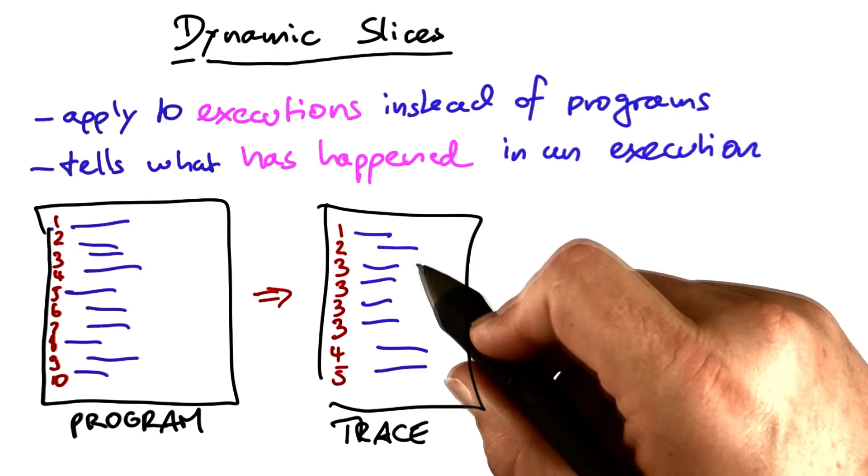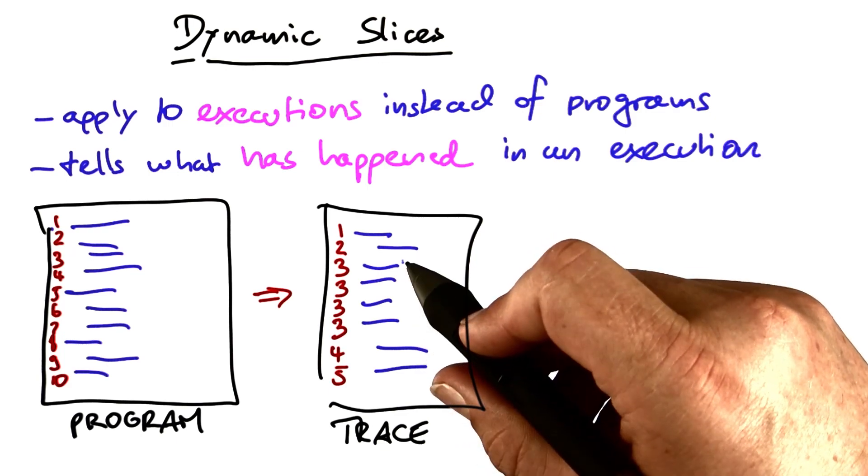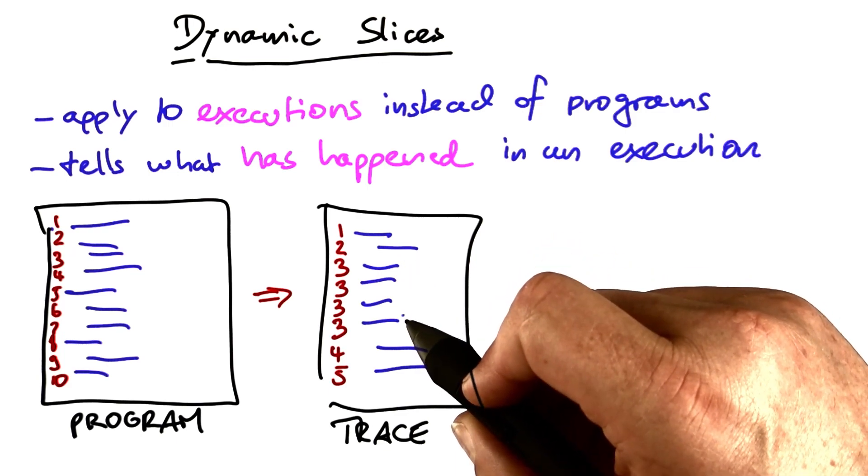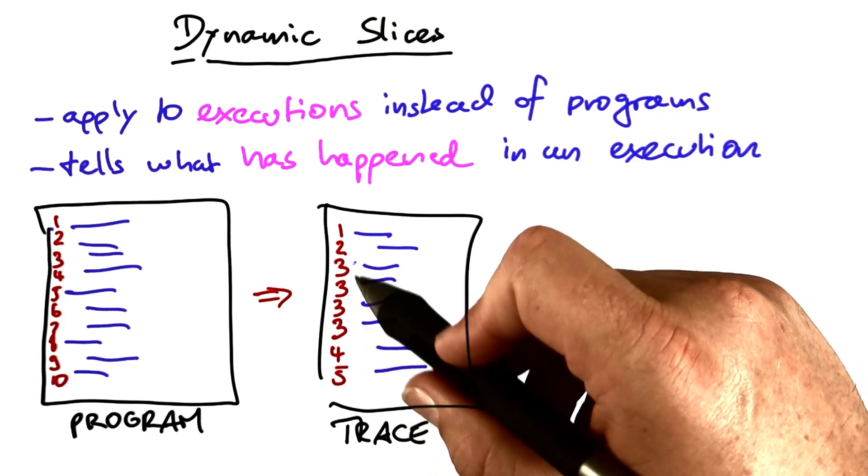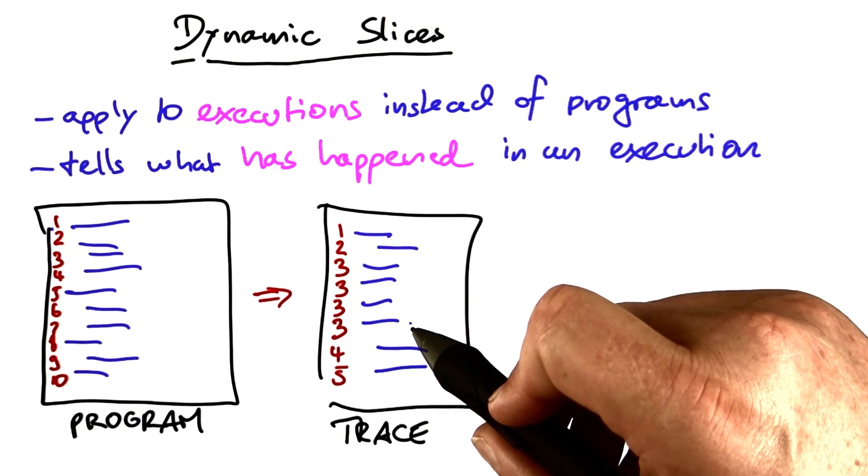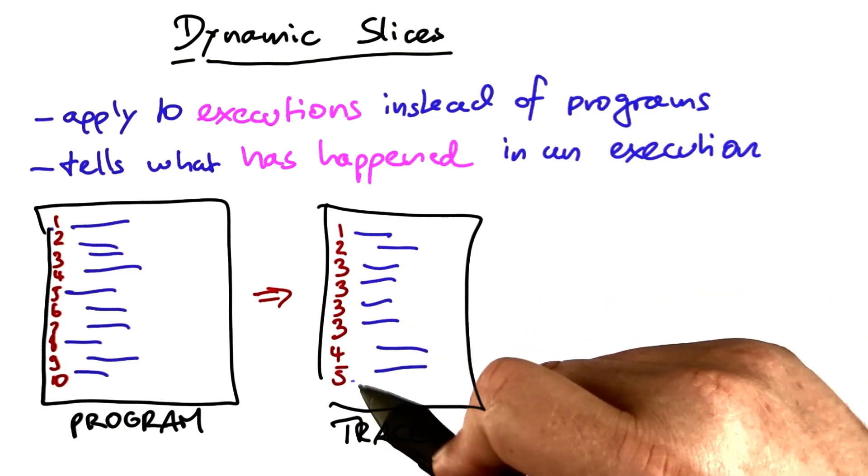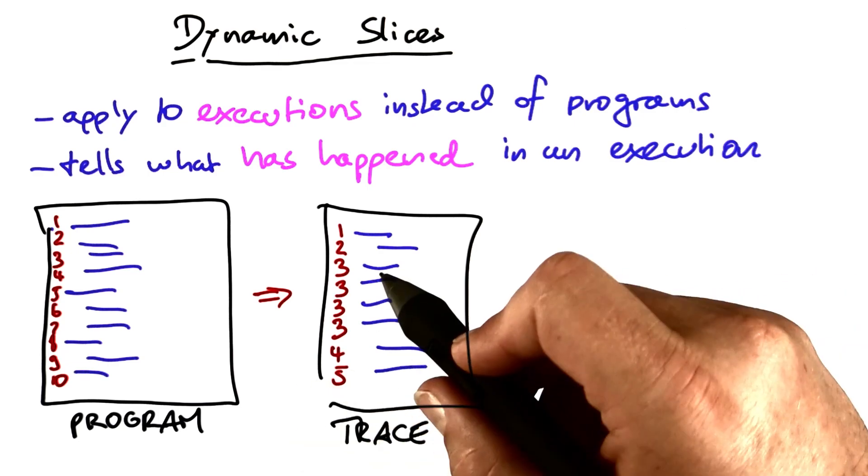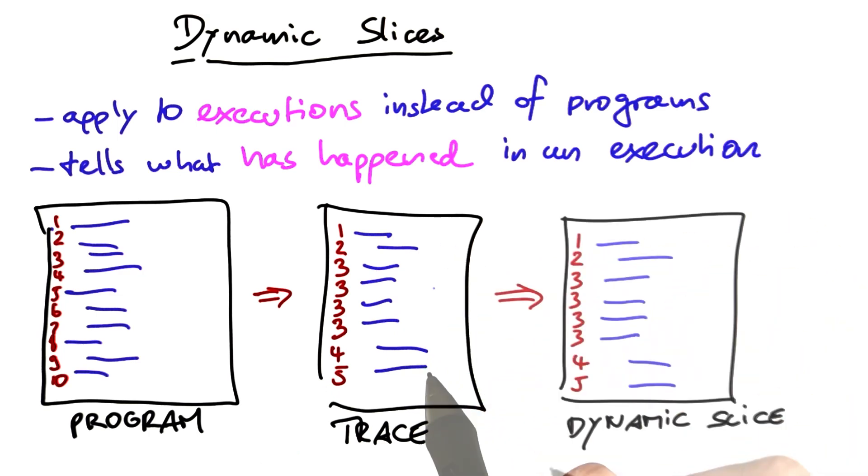A trace lists the statements in the program in the order in which they were executed. So if line 3, for instance, was executed four times in a row, then the trace will contain line 3 four times, followed by line 4, followed by line 5, and possibly going back to line 3 in case there's a loop.